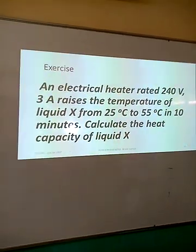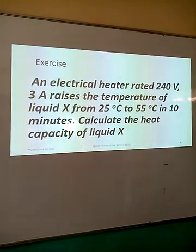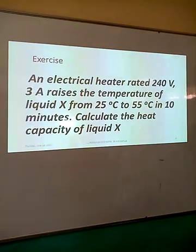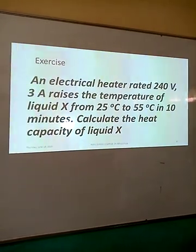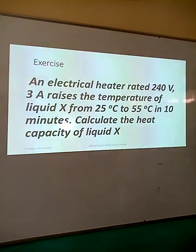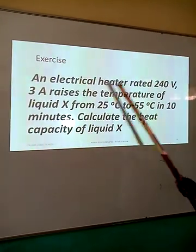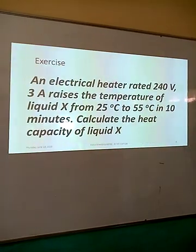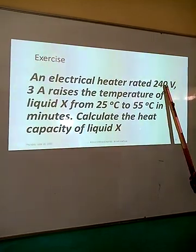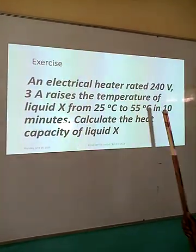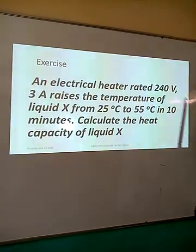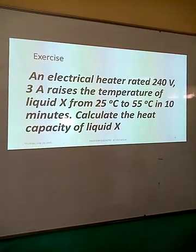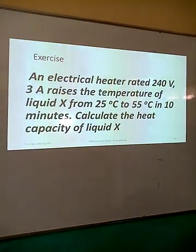Here is an exercise: an electrical heater rated 240 V and 3 amperes raises the temperature of a liquid X in 10 minutes. Calculate the heat capacity of the liquid. We can calculate the heat given out by the heater using Q equals VIT, since we have the voltage, current, and time. Then we equate that quantity of heat to C delta theta to get the heat capacity of the liquid.